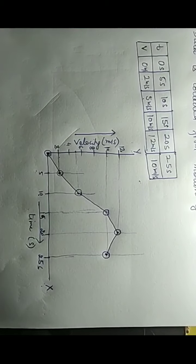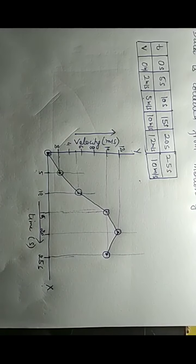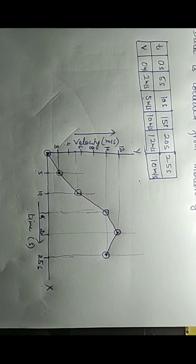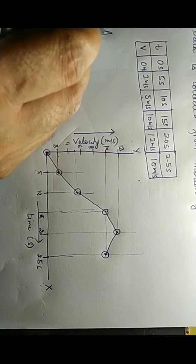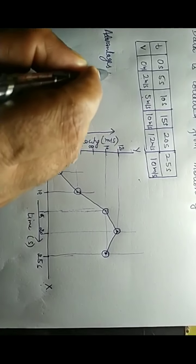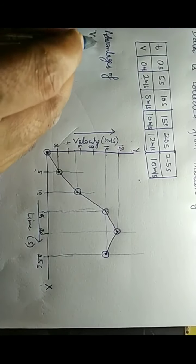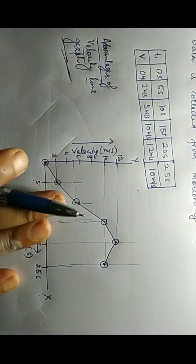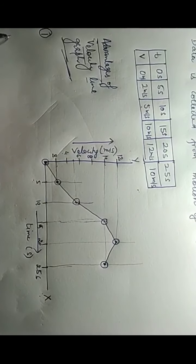This is our velocity-time graph. Now, why is there a need to draw it? Next we will discuss the advantages of the velocity-time graph. The first advantage is that we can find the velocity of a particle or a car at any time.